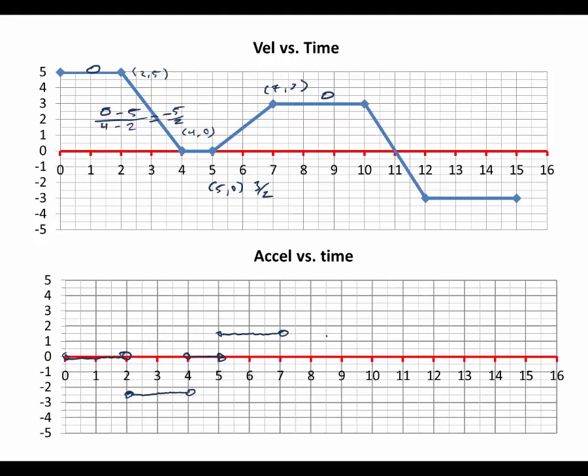I have 0 as my slope from 7 to 10. I'm going from 10, 3, to 12, negative 3. So the slope here is negative 3 minus 3 over 12 minus 10, which is negative 6 over 2, which is negative 3. So now I'm going to go down to negative 3. Stay on that until 12.